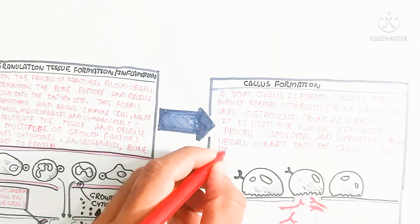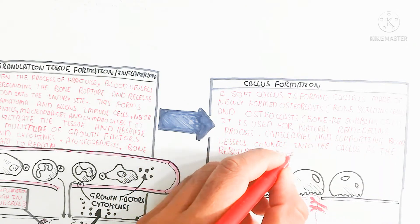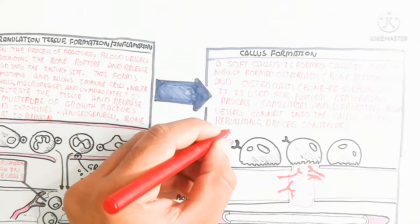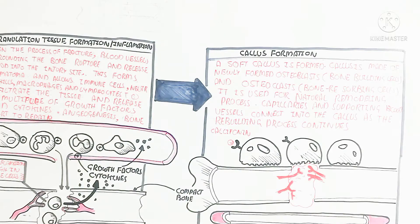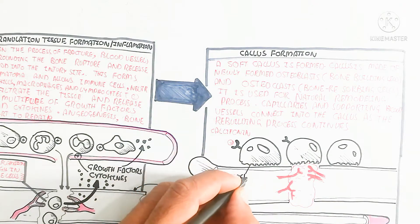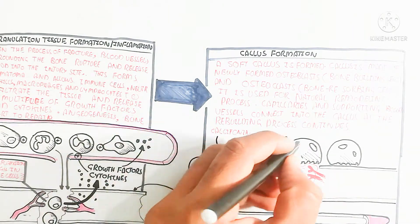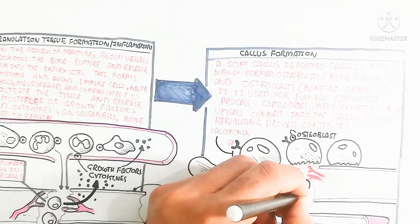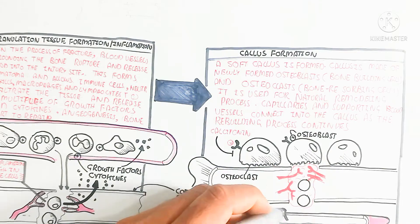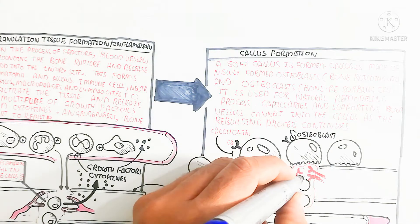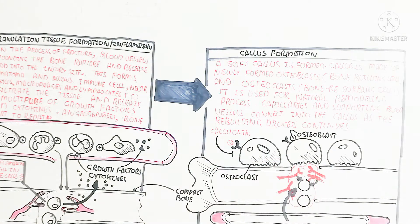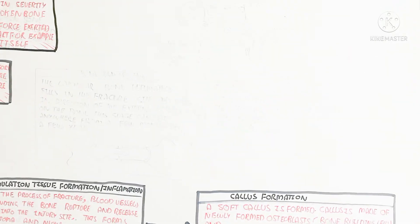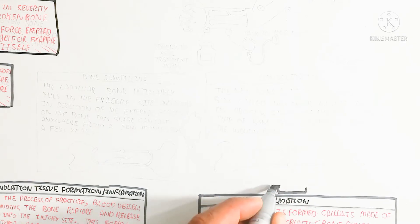Calcitonin is produced, which inhibits osteoclast reabsorption of bone, while osteoblasts deposit calcium and phosphate from the blood and convert into mature osteocytes. The callus formation is a messy lump that stores calcium and phosphate to form a soft callus, which is the precursor of hard bone.